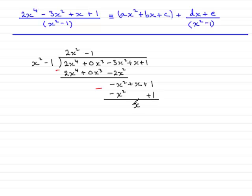Now because this power here, x to the power of 1, is less than the power here, x squared, this brings us to the end of the division.